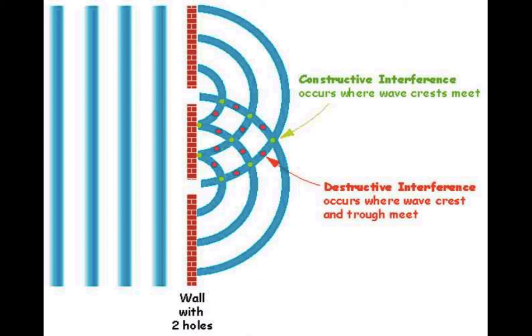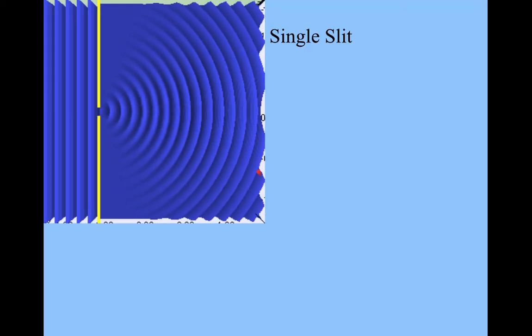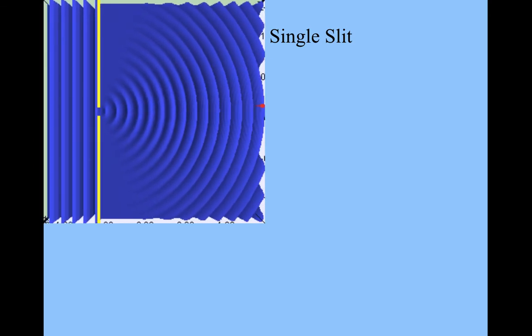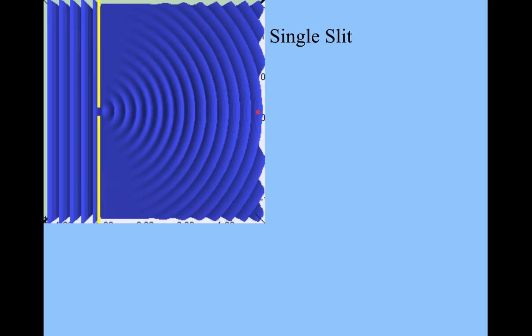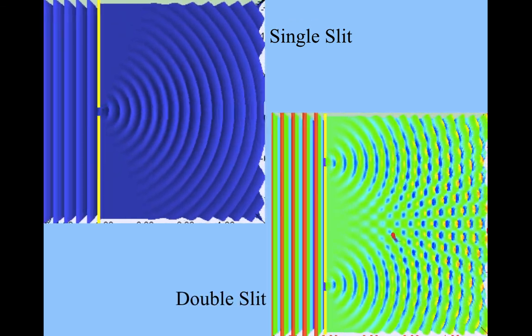Constructive interference manifests itself differently, whether it's just a physical wave, whether it's a sound wave, or whether it's a light wave. Here's an example of single slit diffraction. Here's an example of double slit diffraction.